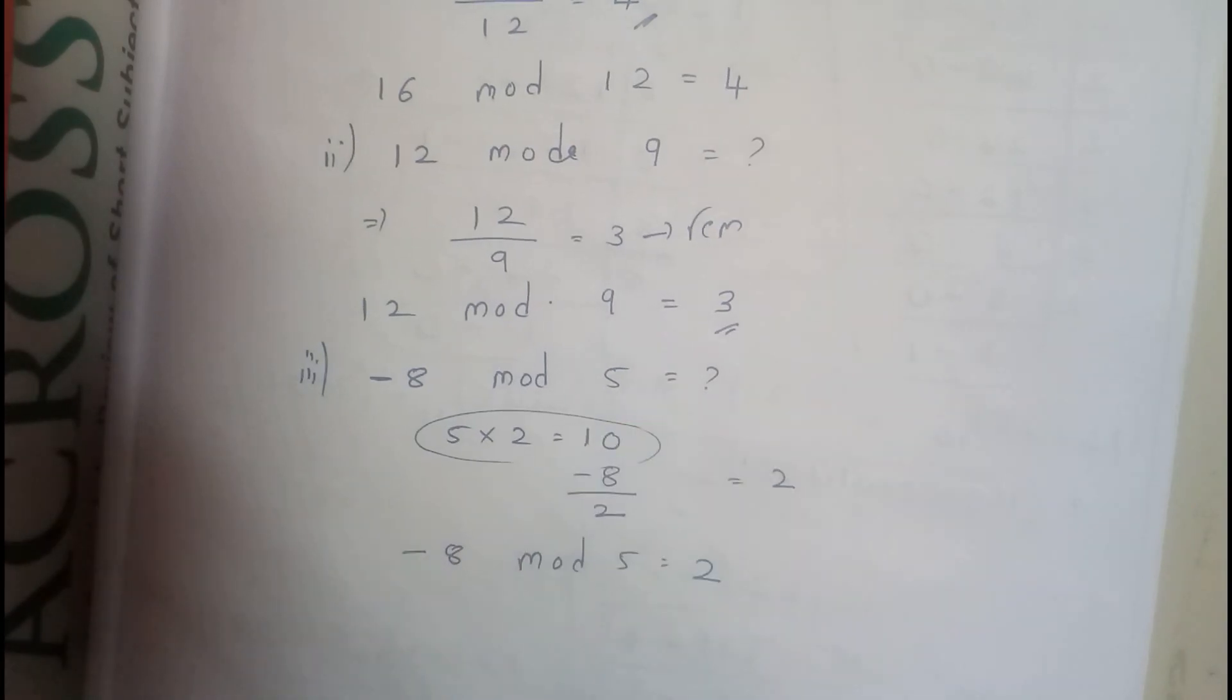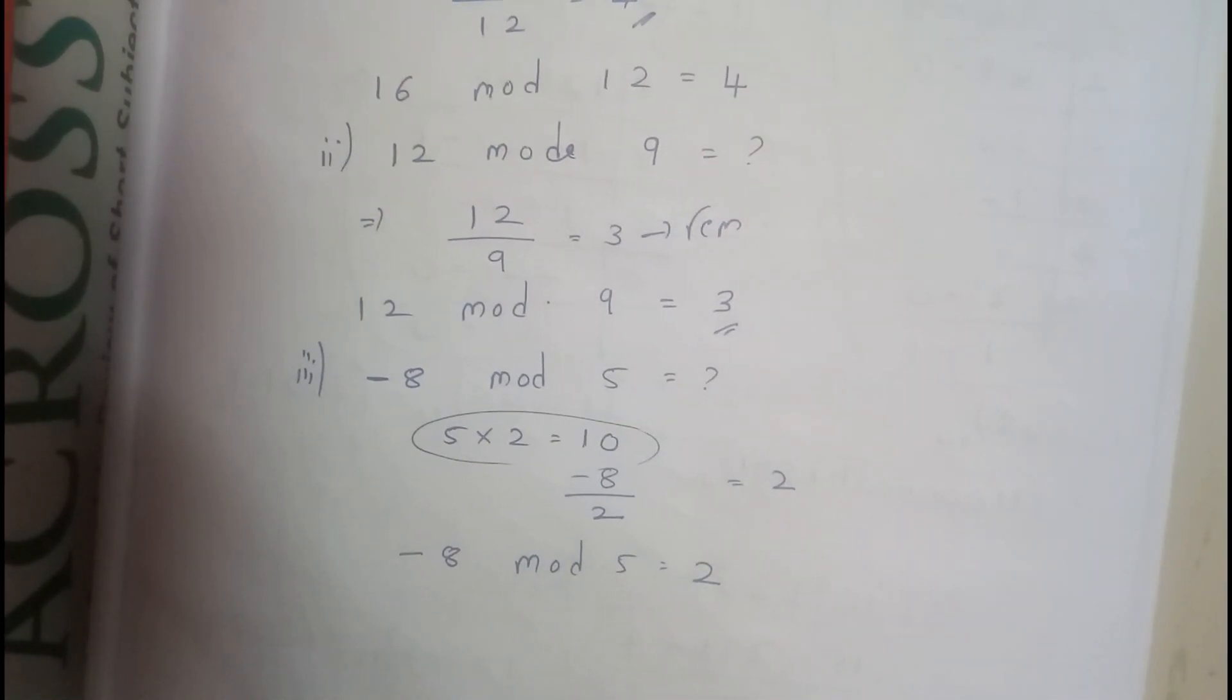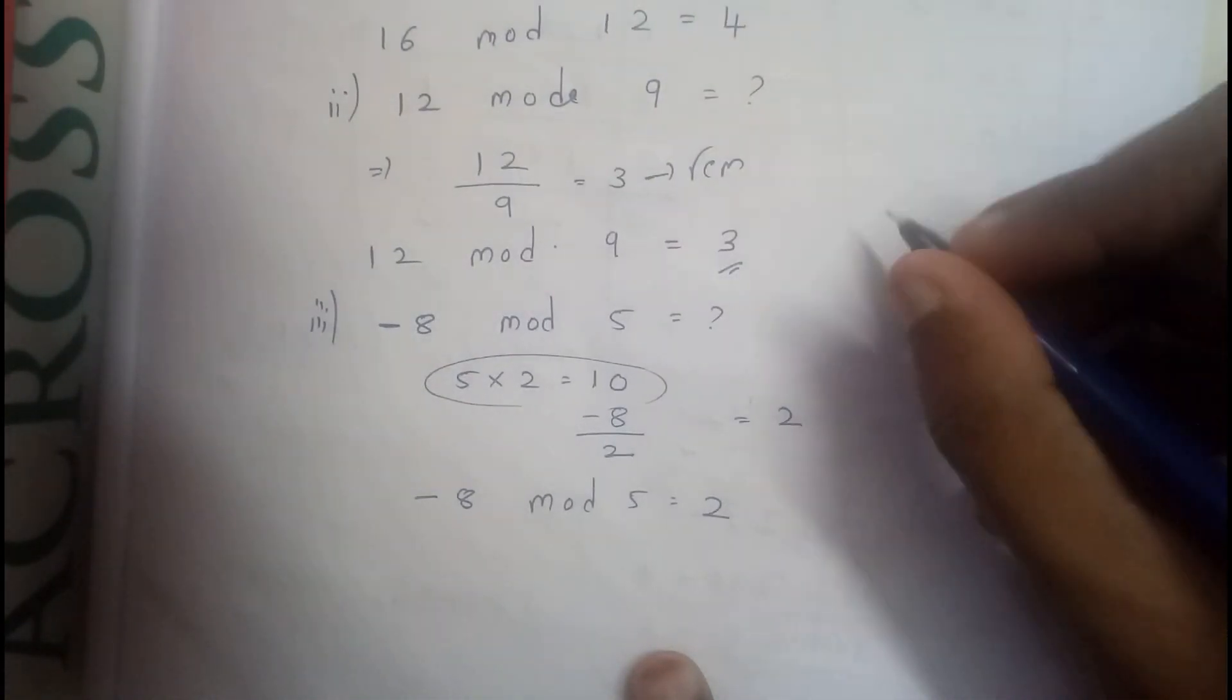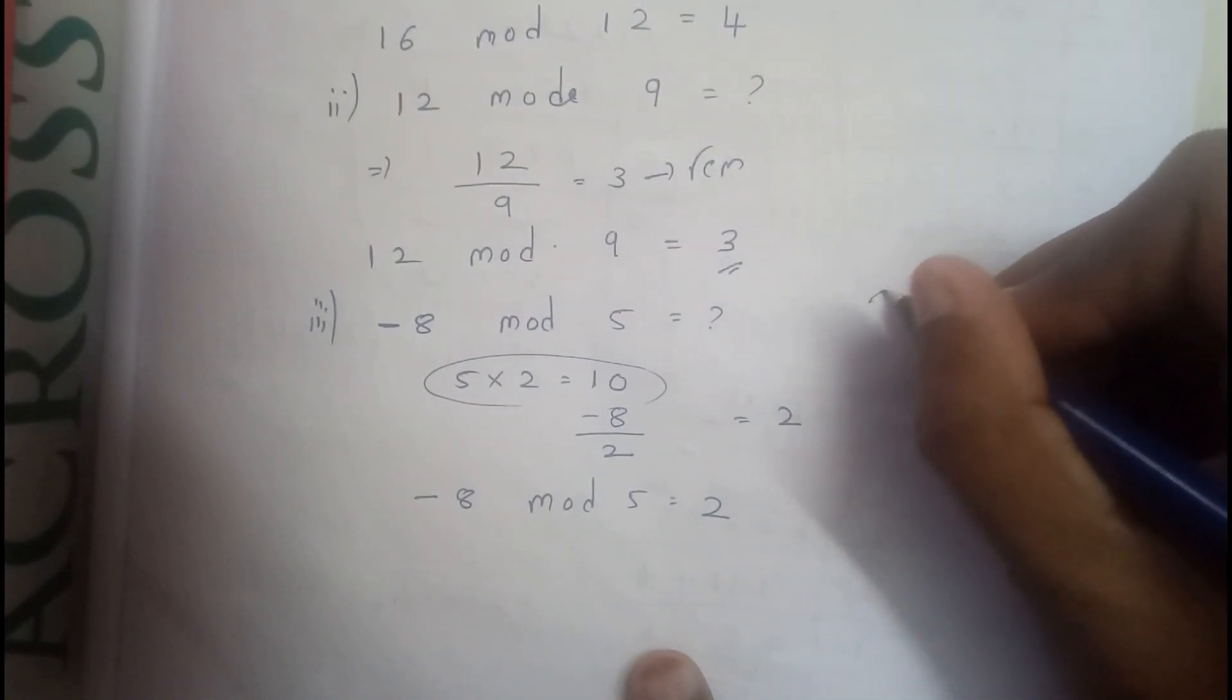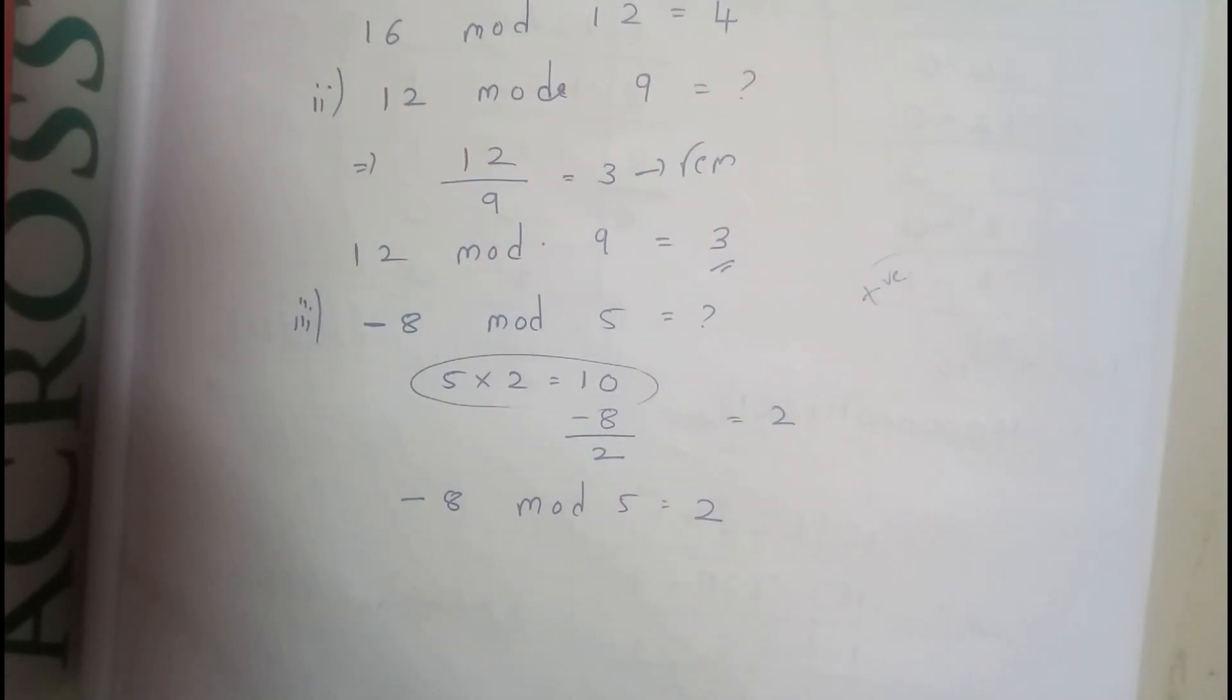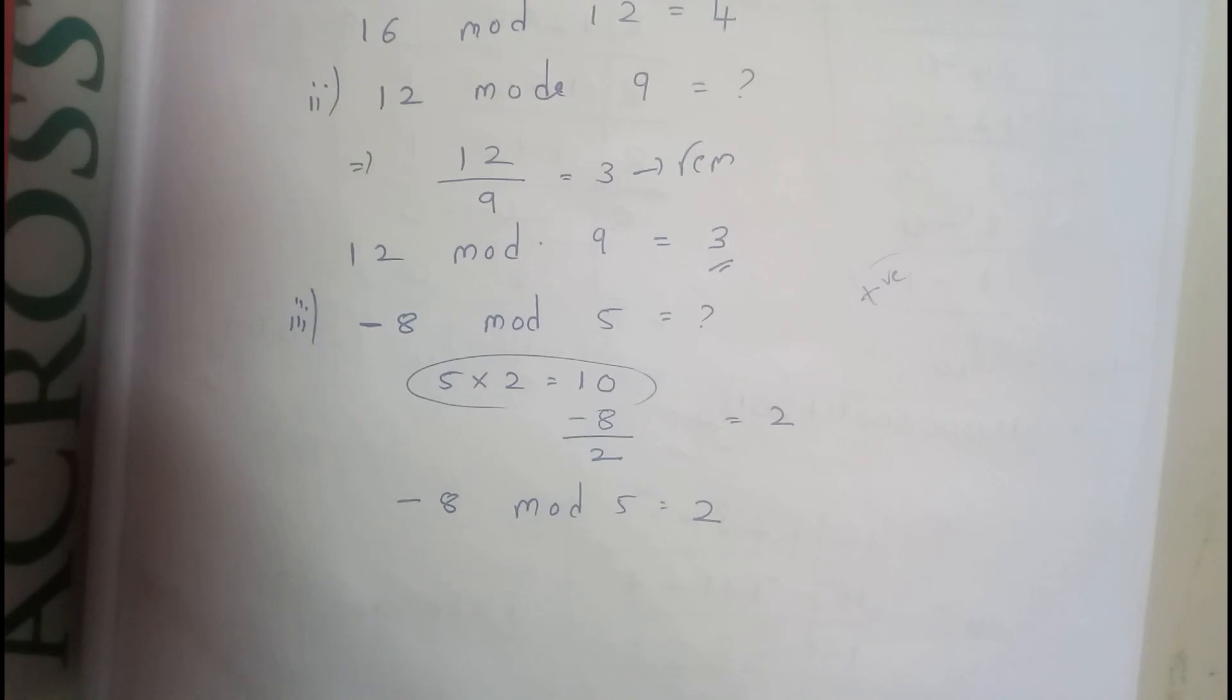But in this case it is a bit different. Basically, the remainders should mostly always be positive. That's one of the things that you should remember - it should be positive.